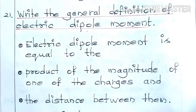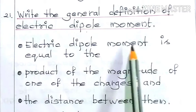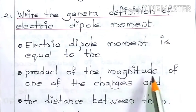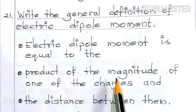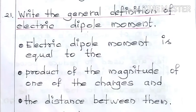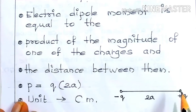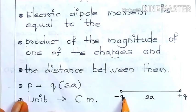Next question: Write down the general definition of electric dipole moment. Electric dipole moment is equal to the product of the magnitude of one of the charges and the distance between them. What is meant by a dipole? Two equal and opposite charges separated by a small distance is called a dipole. In the diagram, this is the structure of a dipole: two equal charges q and q, but opposite in nature — minus q and plus q — separated by a small distance equal to 2a.